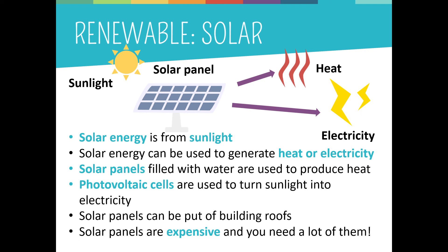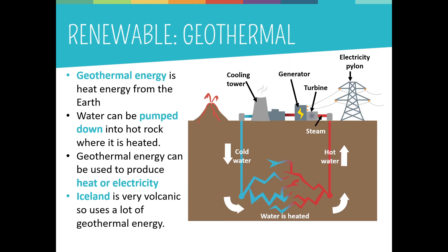A good thing about solar cells is that they can be placed on the roof of a building or home, not taking up any extra space. It is quite difficult to generate a lot of electricity using solar energy because individual photovoltaic cells are expensive and they can't generate a lot of electricity, so you need thousands of them. Solar power can't be harnessed in places where sunlight isn't very strong — it is best used in countries where the sun is strong and regular.